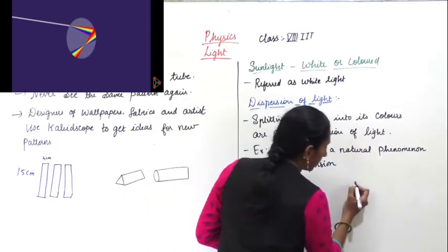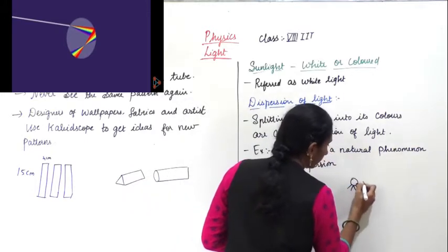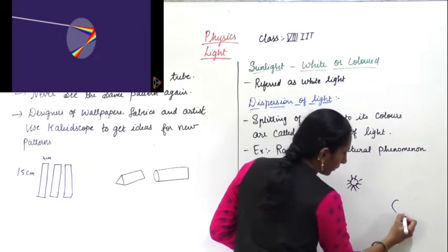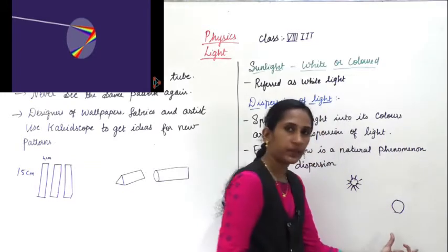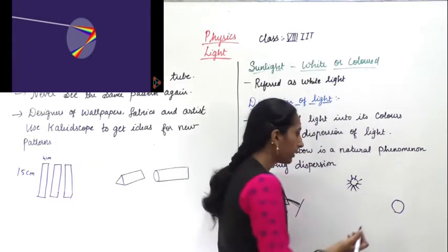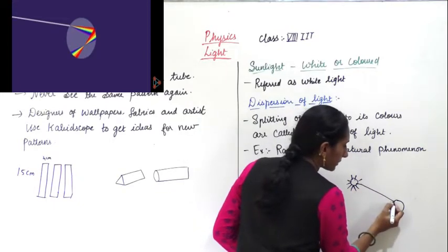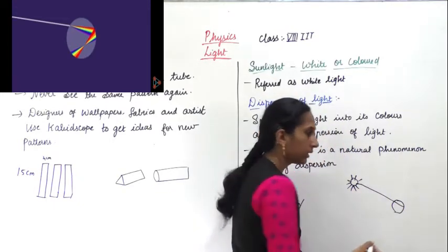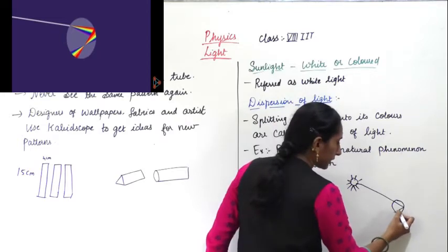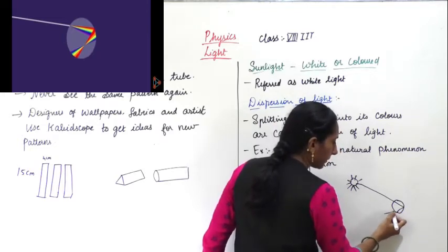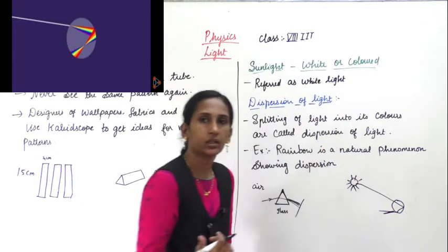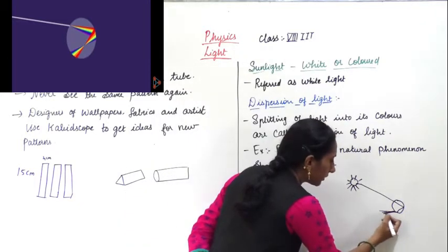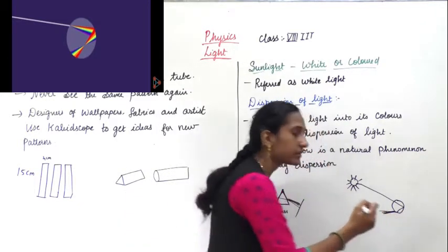This is the sunlight falling on the droplet. This droplet acts as a prism. When the sunlight falls on the droplet, it enters into the droplet, reflects inside, and after reflection it gives us the seven colors.